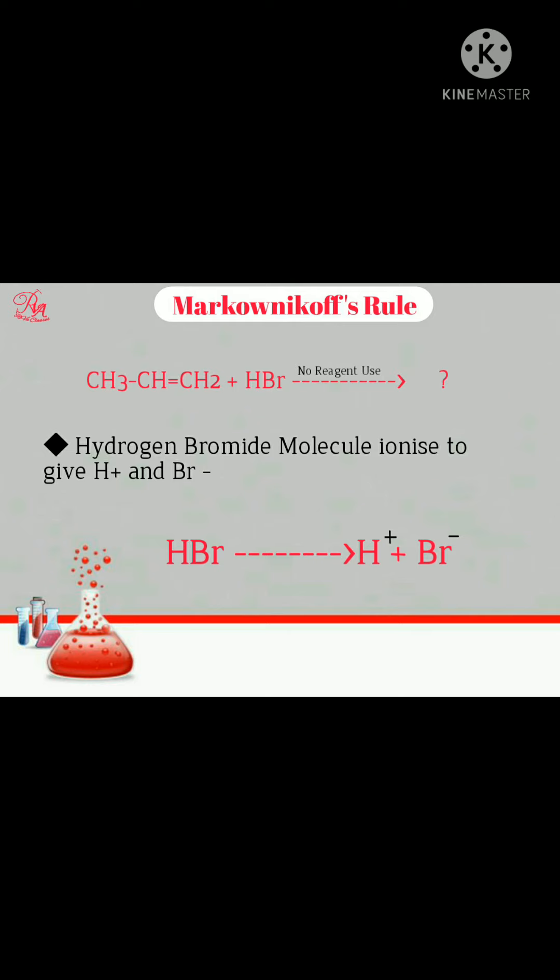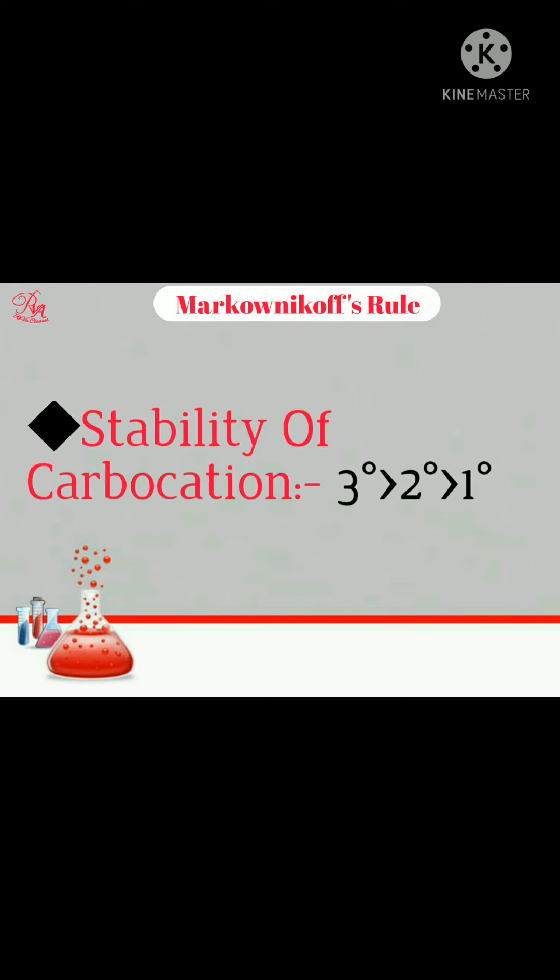The Markownikoff rule is best explained by the stability of carbocations. We have seen before that the more stable carbocation is formed, the nucleophile attacks it, and we get the product.